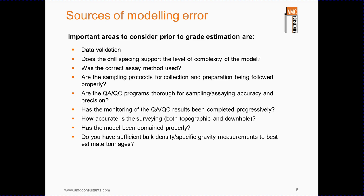Some sources of modelling error occur through poor data validation or the modelling of a vein that is not supported by the drill spacing relative to the complexity of the mineralised structure. Sometimes an assay method is selected that is not suitable to the grade or mineralisation style of the deposit. Is the aliquot large enough to truly represent the grade variance? Care needs to be taken with the sampling protocols and whether they have been followed correctly. Are the QAQC programmes thorough enough? And have the QAQC results been monitored continuously so that the failed batches can be reassayed in a timely manner?